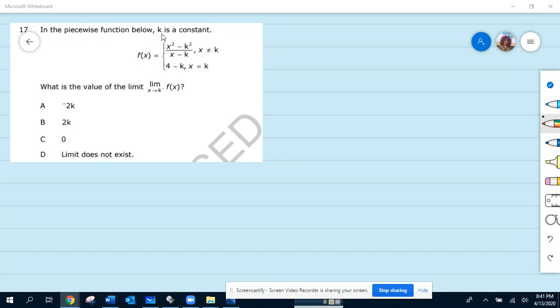We have a piecewise function where k is a constant. It is required to find the value of the limit when x is going to k negative from the function f(x).